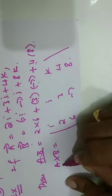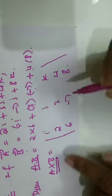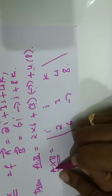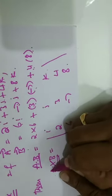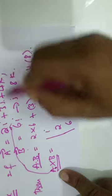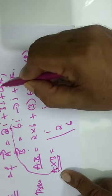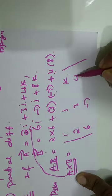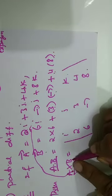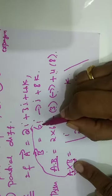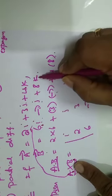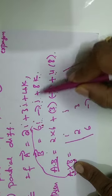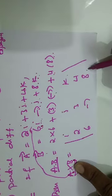Now what is the cross product a × b? For a cross b, you write i, j, k as the first row. The coefficients of i, j, k from vector a — that is 2, 3, 4 — are written as the second row. Corresponding to vector b = 6i - 7j + 8k, the coefficients 6, -7, 8 are written as the third row.